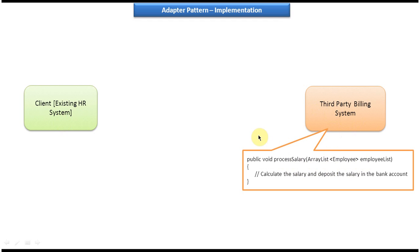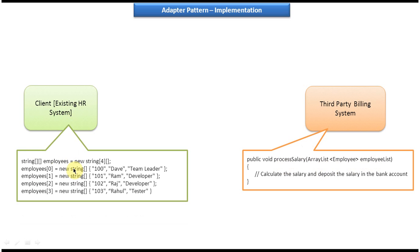If you want to process the salary then you have to pass an ArrayList of Employee. What this method will do is iterate the employee list, get each employee, calculate each employee's salary, and deposit the employee salary into their bank account. On the left side you can see the HR system which has employee information in a string array format. But this third-party billing system accepts employee information as an ArrayList. So if the HR system wants to process salary, it cannot make a call to this third-party billing system because the process salary method won't accept an employee string array.